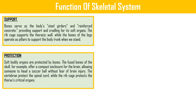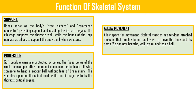Protection: soft bodily organs are protected by bones. The fused bones of the skull offer a compact enclosure for the brain, allowing someone to head a soccer ball without fear of brain injury. The vertebrae protect the spinal cord while the ribcage protects the thoracic critical organs like the heart.